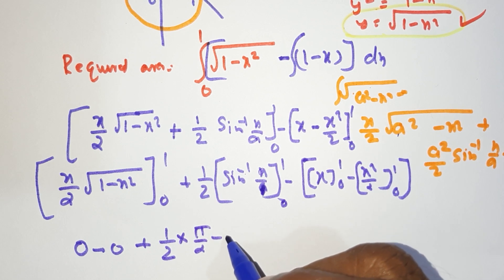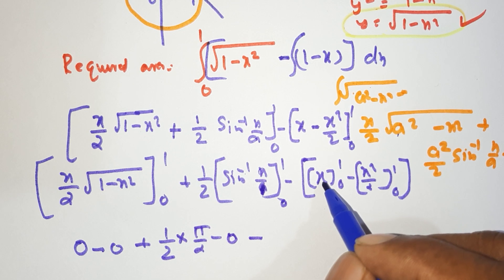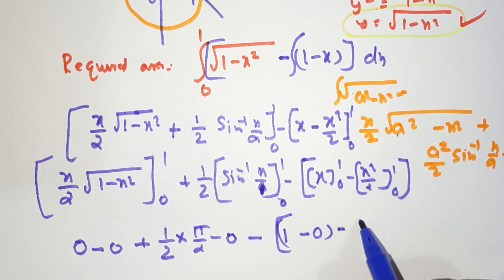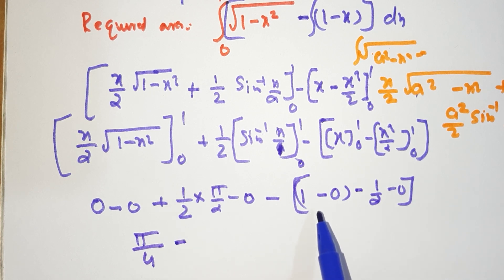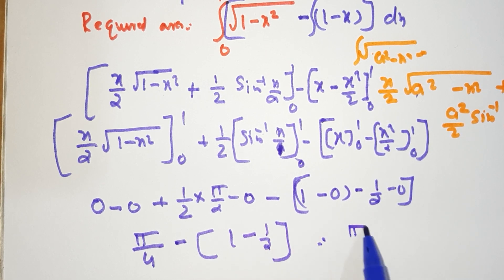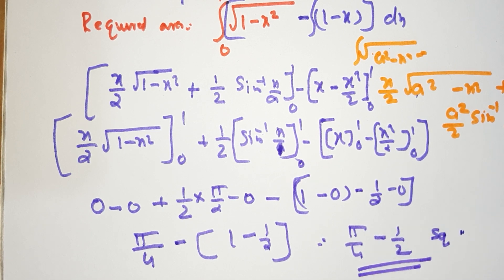Evaluating: sin inverse of 1 is pi over 2. So we get one half times pi over 2, which gives pi over 4, minus one half. The required area equals pi over 4 minus 1 over 2 square units.